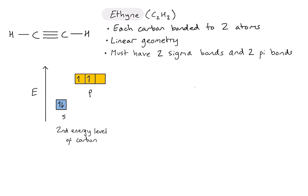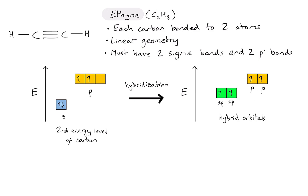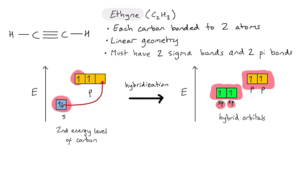The hybridization in this case looks like this: the electron from the s orbital is promoted, and then the s orbital and one of the p orbitals are combined to form the new hybrid orbitals. Because they come from an s and a p orbital, we call them sp hybrid orbitals. Conveniently, we now have two p orbitals left over, both with one electron.